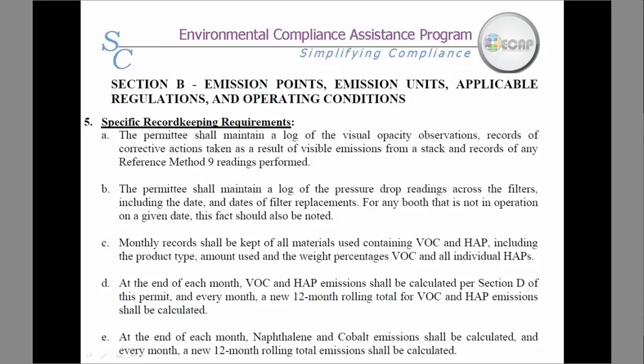Record keeping requirements — some permits will list or relist all required records, or will reference another portion of the permit that has already indicated the record keeping requirement. Records can be kept in paper or in electronic format. For example, this permit requires opacity logs, paint booth logs, material usage logs, rolling total emission calculations, and the facility also has lower limits on naphthalene and cobalt emissions due to their air toxics assessment.